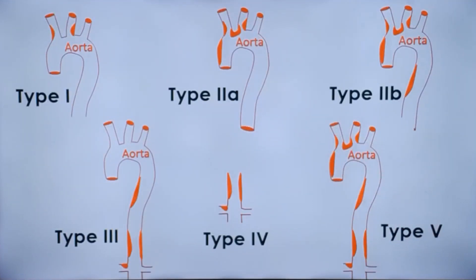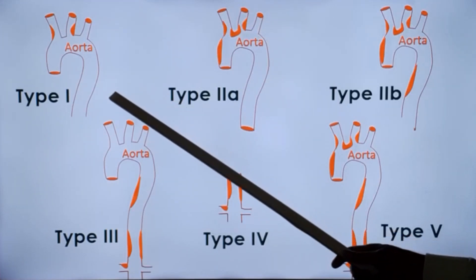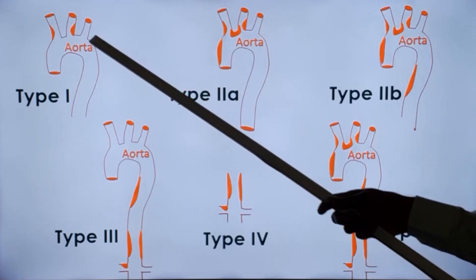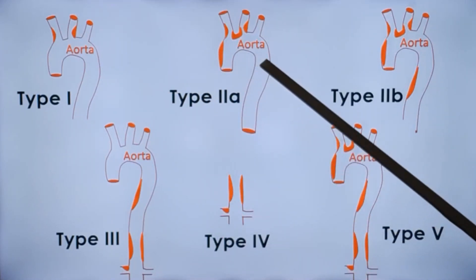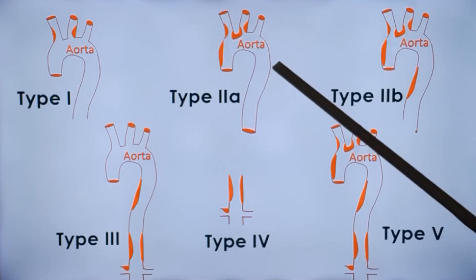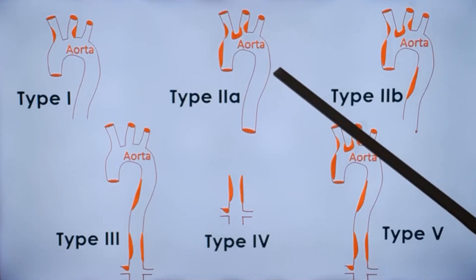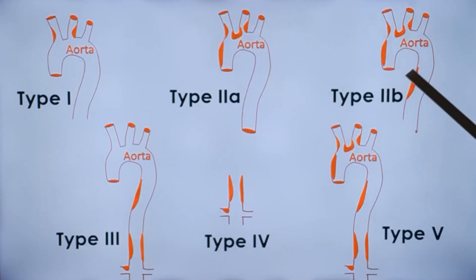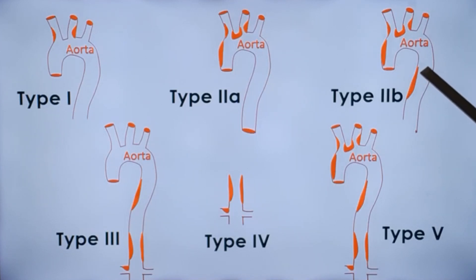Angiographic classification of Takiyasu Arteritis was suggested by Moriwaki et al after a review of 102 Indian and 80 Japanese patients with Takiyasu Arteritis. Type 1 is involvement of branches of the aortic arch. Type 2a is ascending aorta and aortic arch as well as branches of the aortic arch. Type 2b is ascending aorta, aortic arch and its branches, and thoracic descending aorta.